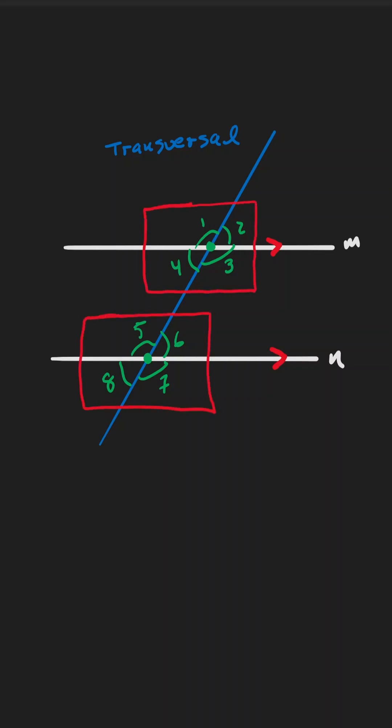Corresponding angles are angles that are on the same position in a different intersection. Notice that angle two is in the upper right hand side and angle six is also on the upper right hand side of that intersection. They are said to be corresponding and they are congruent.